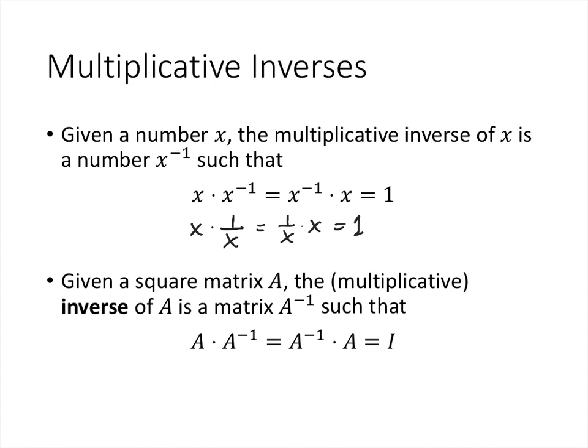When we have a square matrix A, the inverse of A is a matrix so that when we multiply that matrix by A, we get the multiplicative identity, which is the identity matrix. The matrix has to be square so that we can multiply the inverse on both sides. So if A is n by n, then A inverse is also going to be n by n, and the identity we get is the n by n identity matrix.